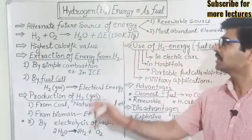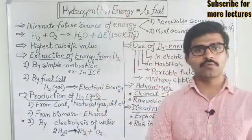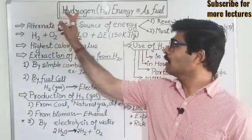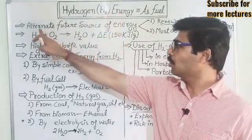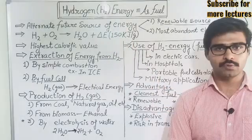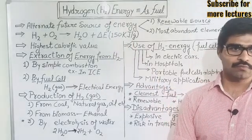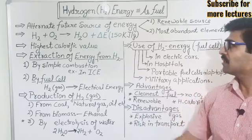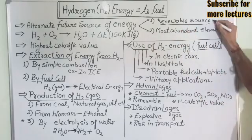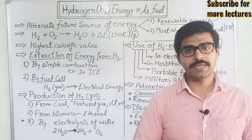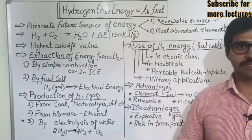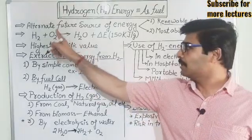Today I will explain the topic of hydrogen energy — how we can use hydrogen gas as fuel. We also call this hydrogen energy an alternate future source of energy. There are different reasons for this: first, it is a renewable source of energy; second, hydrogen is the most abundant element in the universe, comprising about 93 percent of it.